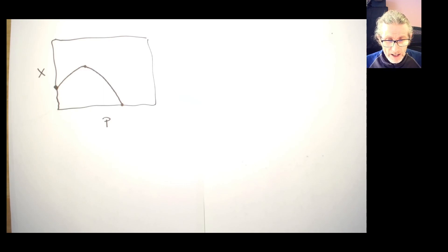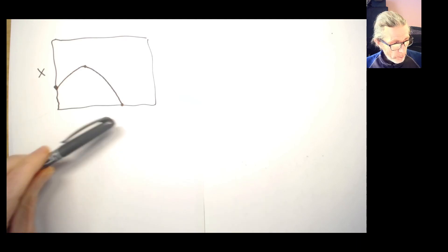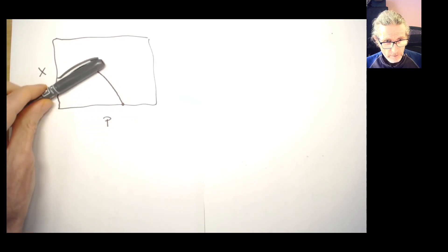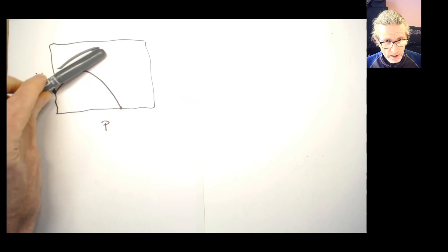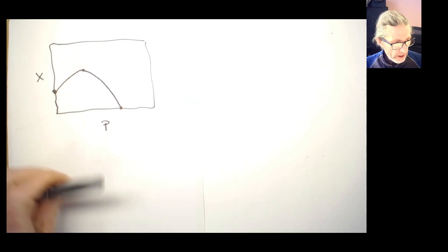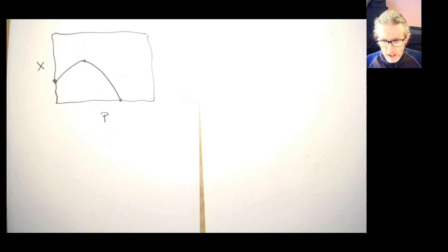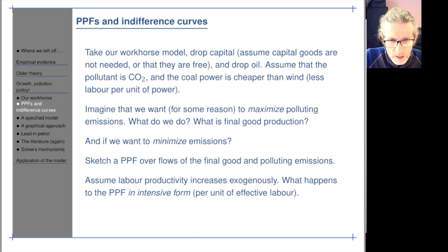That is our production possibility frontier. We can produce any points on this curve or inside, but we can't get to the points outside there. Let's sketch your PPF over the flows of the final good, net flows like consumption, and polluting emissions.